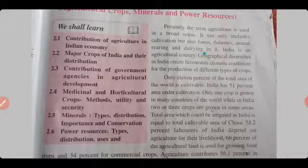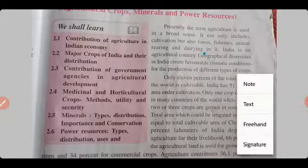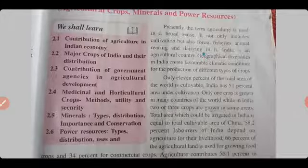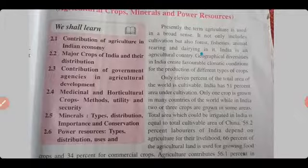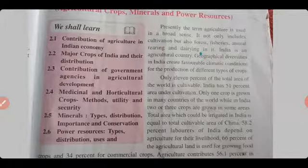Presently, the term agriculture is used in a broad sense. It not only includes cultivation but also forest, fisheries, animal rearing and dairying. So agriculture is used in a broad sense — it includes not only cultivation but also forests, fisheries, and animal rearing.